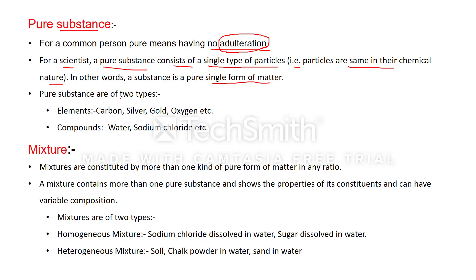Pure substances are of two types: elements and compounds. We will discuss the details of these two later on. Examples of elements are carbon, silver, gold, oxygen, etc. Examples of compounds are water, sodium chloride, etc.